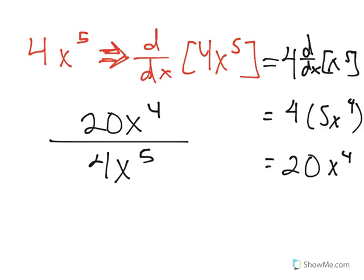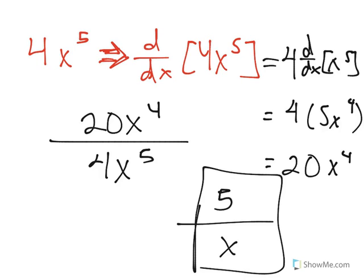So 20 divided by 4 is 5, and x^4 divided by x^5 is 1/x. So this is our relative rate of change: 5/x.